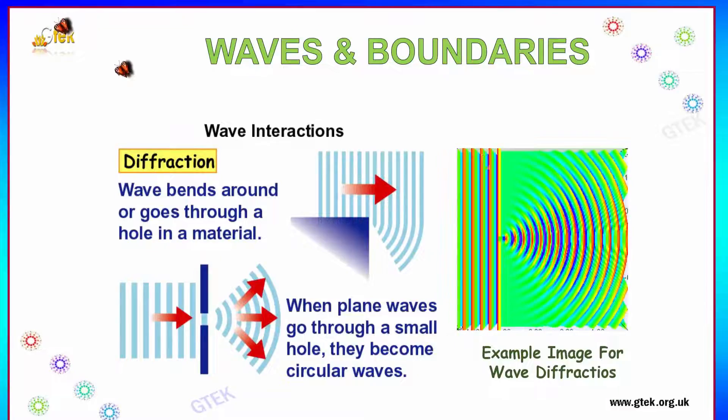When a plane wave goes through a small hole, it becomes circular waves. Before that it was a kind of normal plane waves. After it passes through a hole, we can find the circular waves over here. This is an example of wave diffraction.